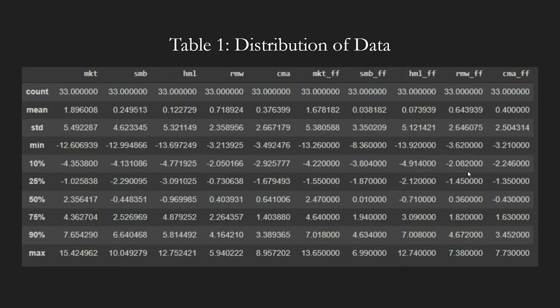Now that we have gone over the new factors, let's take a look at the results. In Table 1, we show our distribution of the values of the three factors versus Fama-French's distribution, labeled FF. The table shows that 33 months of data were analyzed and all units are in percentages. The distributions of all five factors we constructed were almost identical to Fama-French's results, suggesting our code replicated theirs accurately.